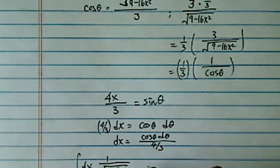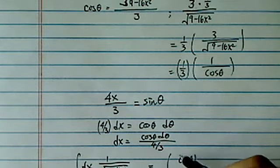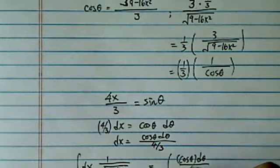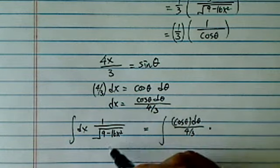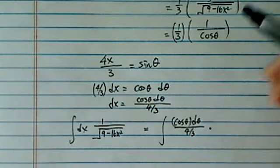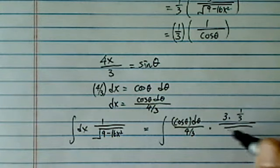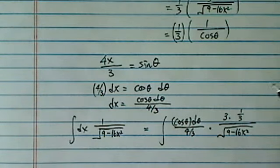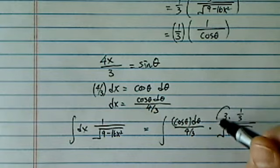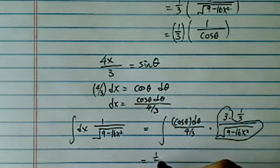So, this one is equal to—let's get rid of dx. That's cosine theta d theta over 4 over 3. Okay, that's a big messy chunk. Hopefully, it'll reduce down. Okay, 1 over this, I'm going to change that into 3 times 1 third over radical of 9 minus 16x squared. As you recognized earlier, 3 over this chunk is what I have.